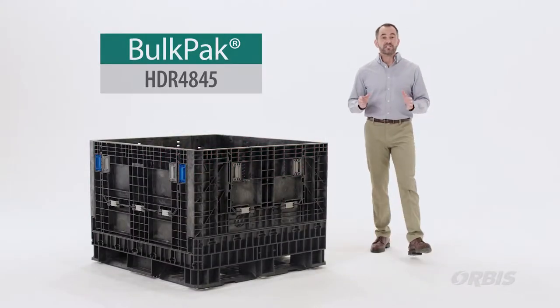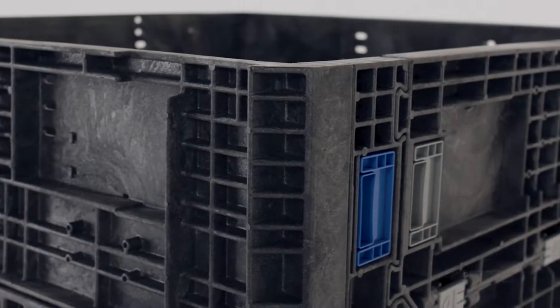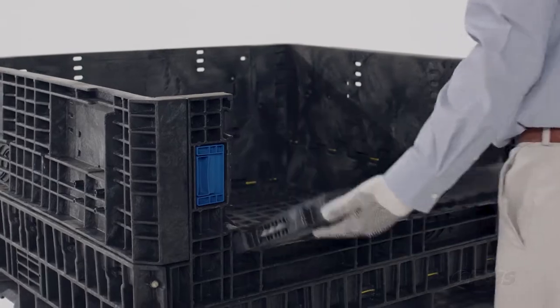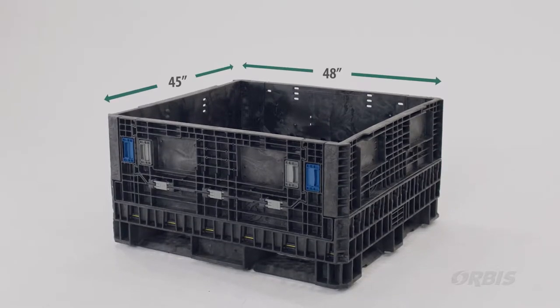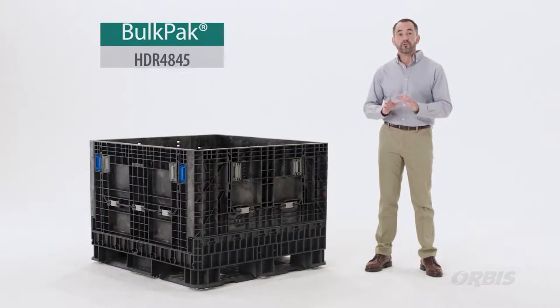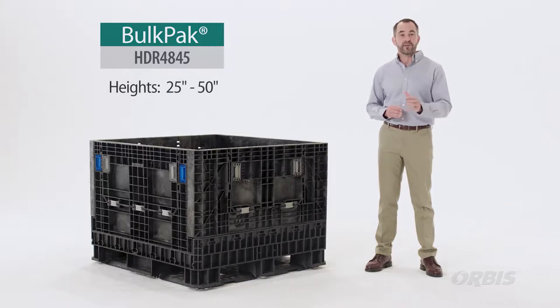Welcome to the BulkPak HDR product line from Orbis. The BulkPak HDR is a long-term reusable collapsible bulk container offered in the 48 by 45 inch footprint. This footprint is offered in several collapsible heights ranging from 25 to 50 inches tall.